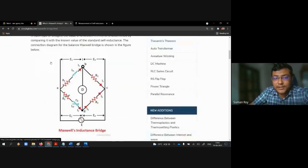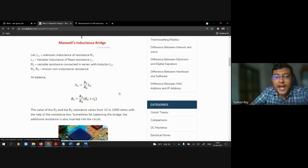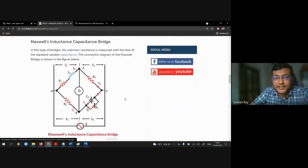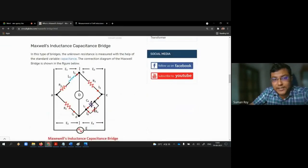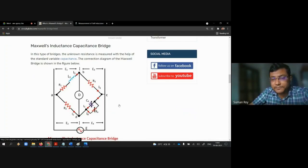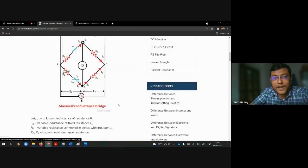This is the first one, Maxwell's inductance bridge circuit diagram. For the second one, Maxwell's inductance capacitance bridge, this is the circuit diagram. We can perform this experiment of measuring self inductance using any one of them. For simplicity, I am taking the first one only. Today we are going to analyze this circuit.